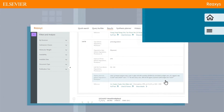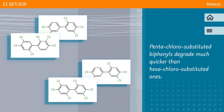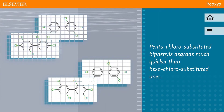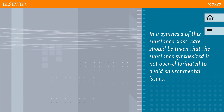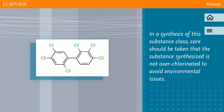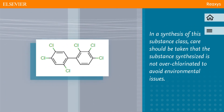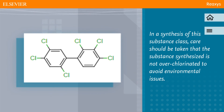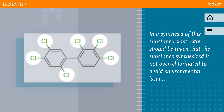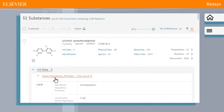We have learned that pentachloro-substituted biphenyls degrade much quicker than hexachloro-substituted ones, which means that in a synthesis of this substance class, care should be taken that the substance synthesized is not over-chlorinated to avoid environmental issues.